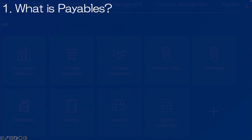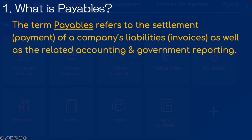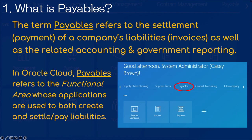Slide one: What is Payables? The term Payables refers to the settlement or payment of a company's liabilities, which are their invoices, as well as the related accounting and governmental reporting documents. In Oracle Cloud, Payables refers to the Functional Area whose applications are used to both create and settle or pay liabilities.